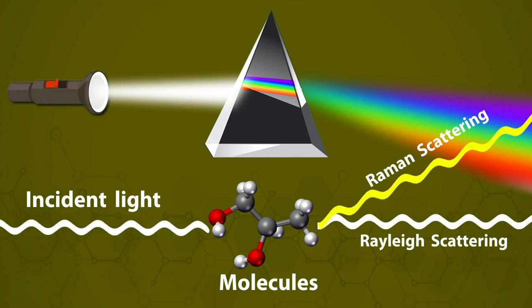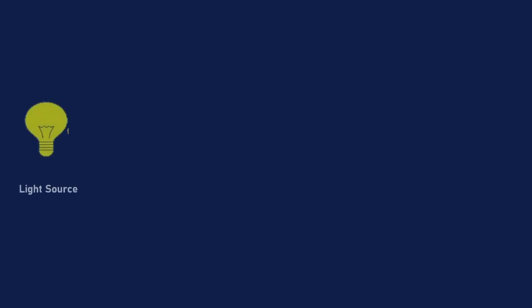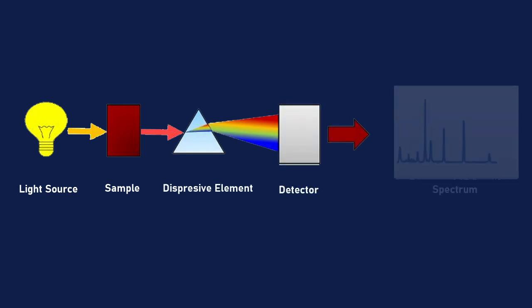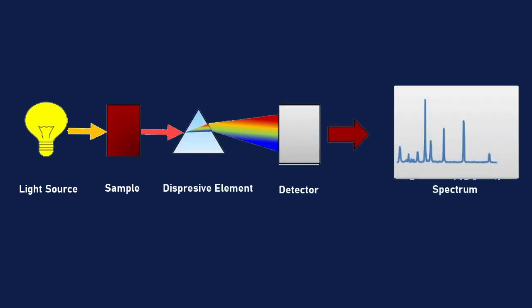Most of the scattered light is of unchanged wavelength. A small part, however, has wavelengths different from that of the incident light. Its presence is a result of the Raman effect. The Raman effect is used in a variety of ways in our daily life.